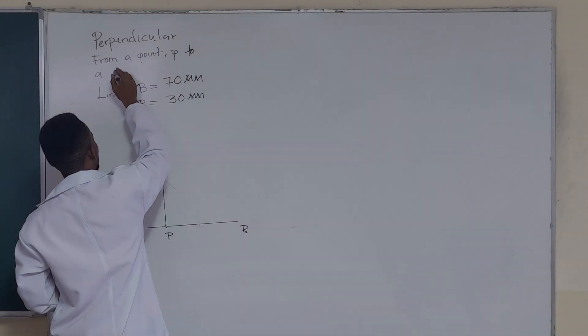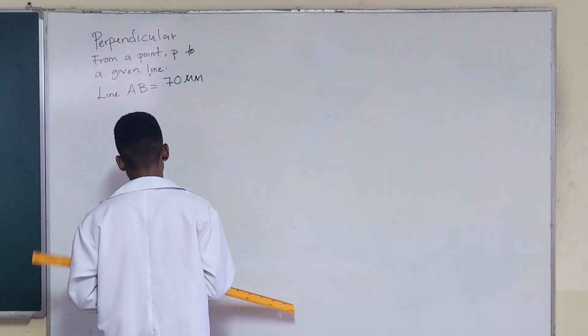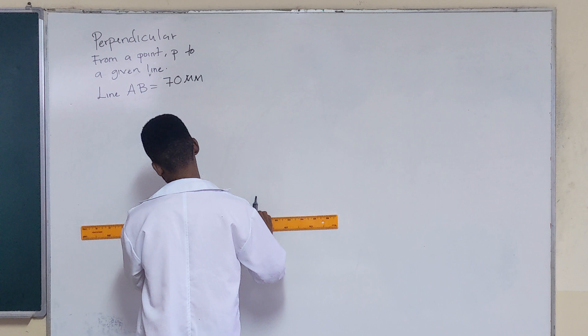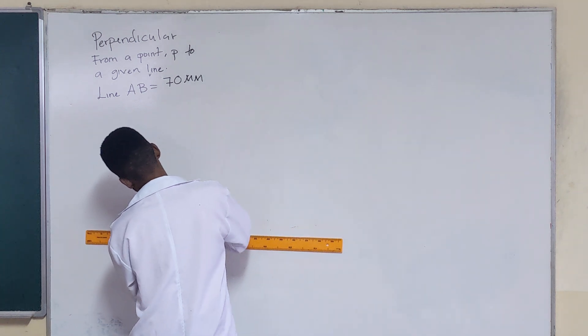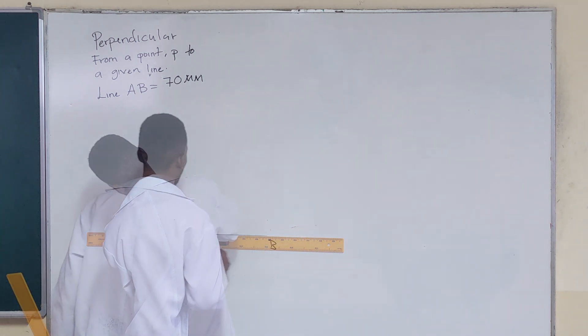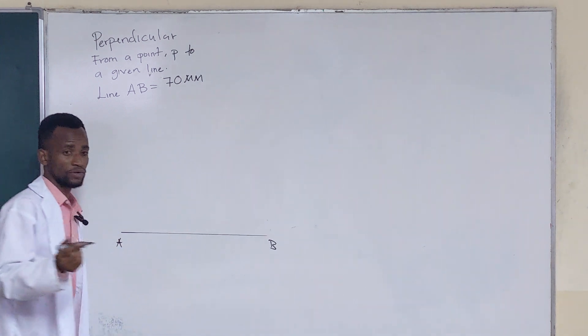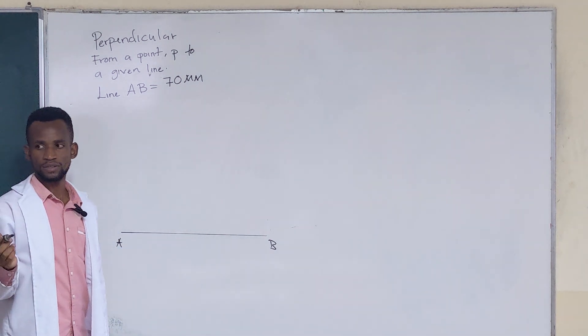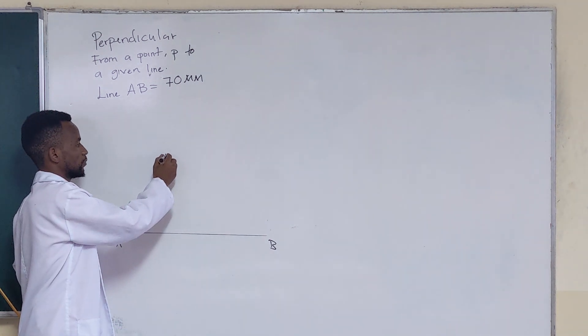So let's learn how to draw a perpendicular line from a point P to a given line. We will draw a line and we can pick a random point as our point P. That's a random point anywhere, so we can just say point P is there.